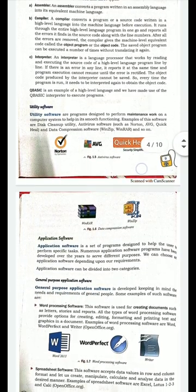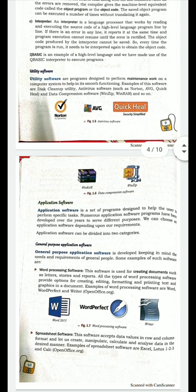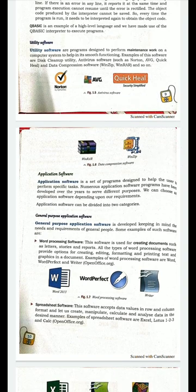The next point is utility software. It is a program designed to perform maintenance work on a computer system to help in its smooth functioning. Examples of utility software include antivirus software and data compression software. Antivirus software is specially designed for the protection of the computer.